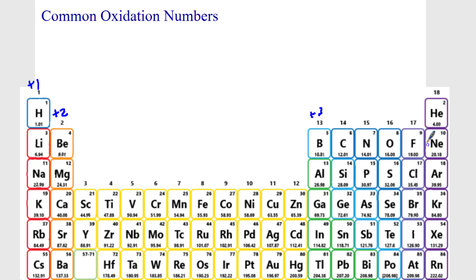The halogens — fluorine, chlorine, bromine, iodine — are non-metals, which means they will tend to gain one electron and become negative one, since that would give them fully filled S and P subshells. Oxygen, sulfur, and selenium will tend to become negative two. Nitrogen and phosphorus will tend to become negative three.